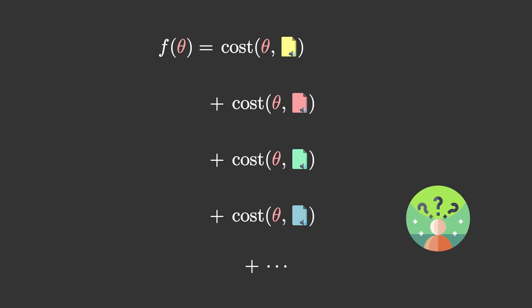And the problem now becomes, how do we find the right value of theta that makes this cost function as small as possible? And this is where the second step, or gradient descent, comes in.